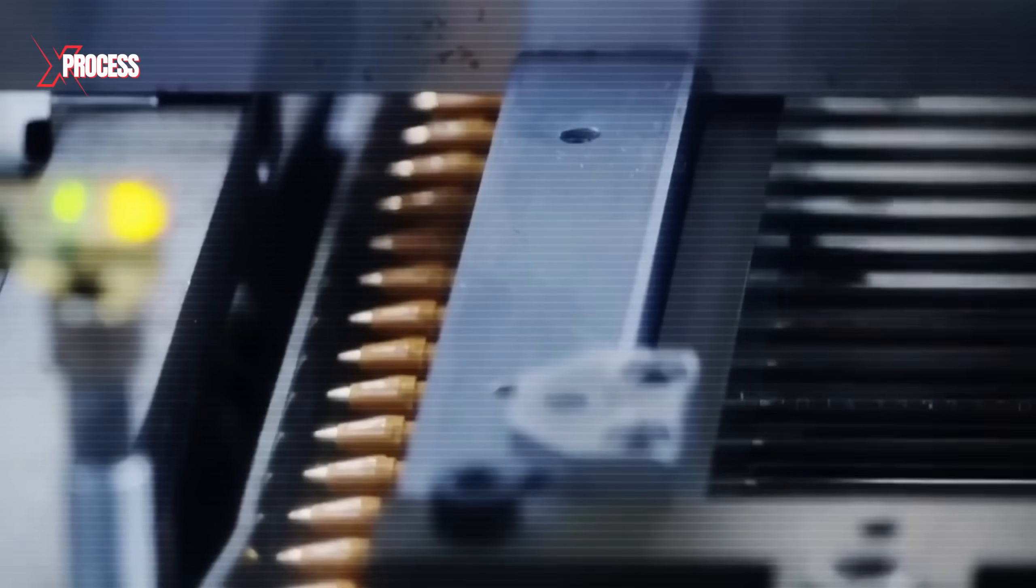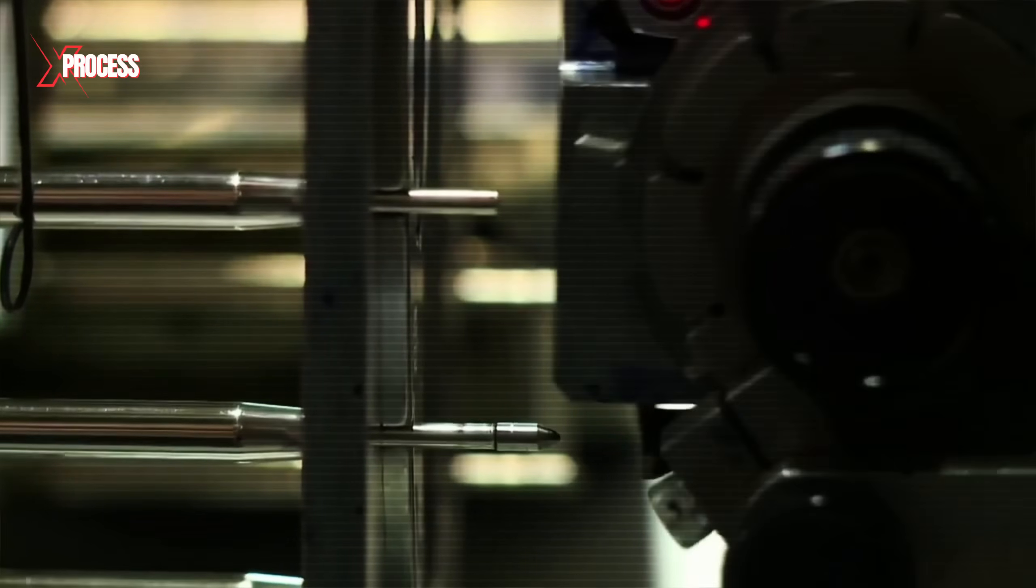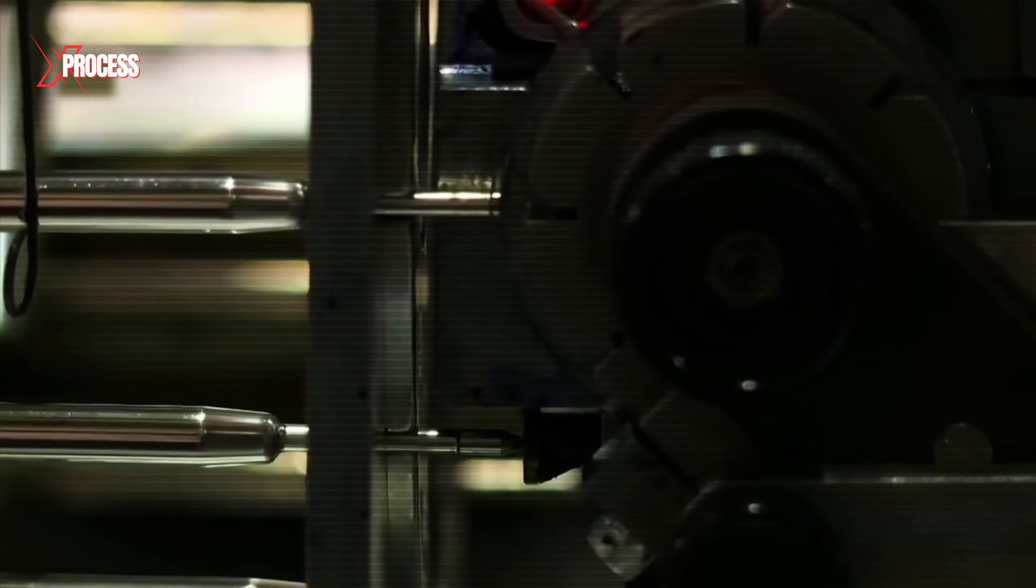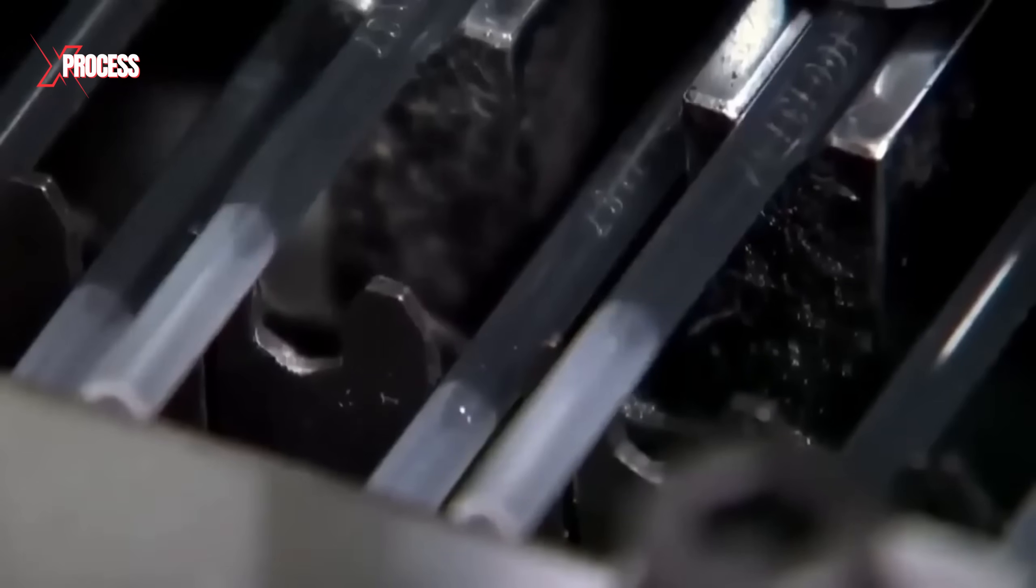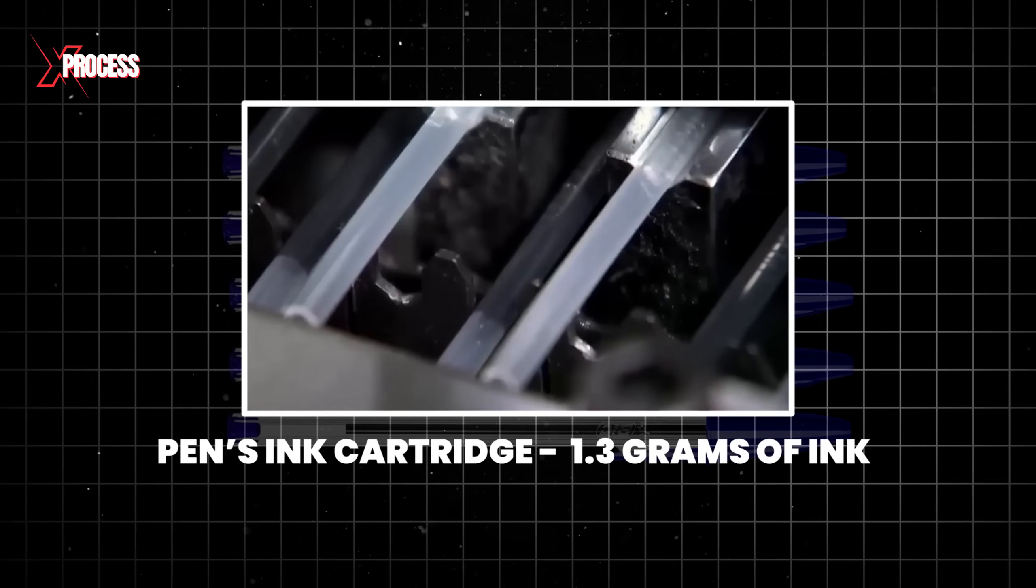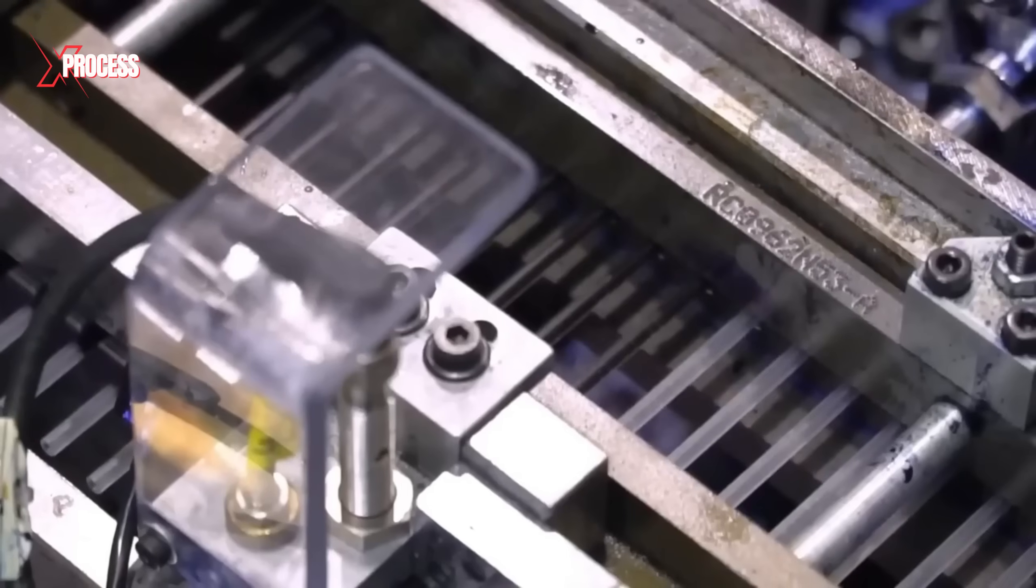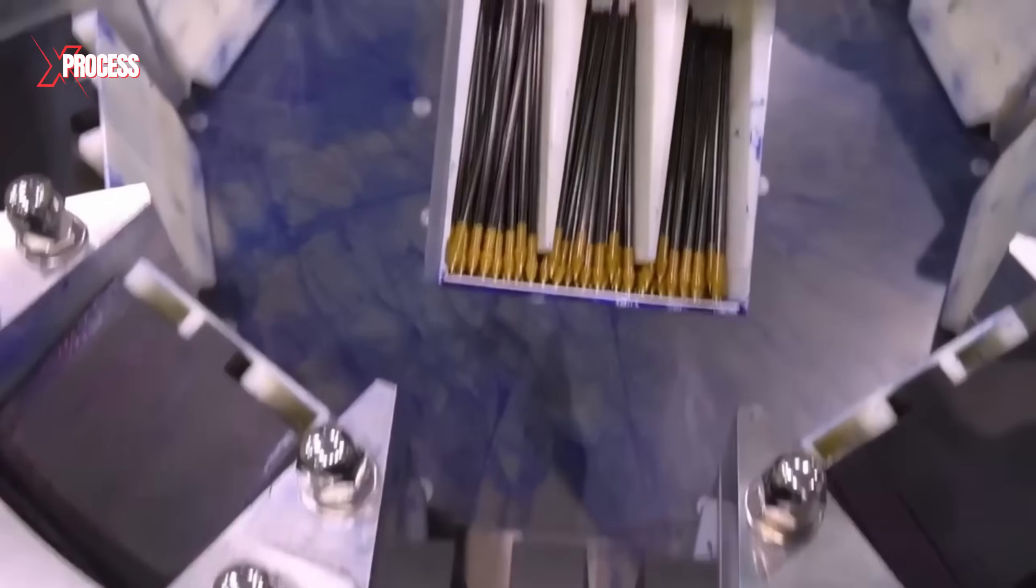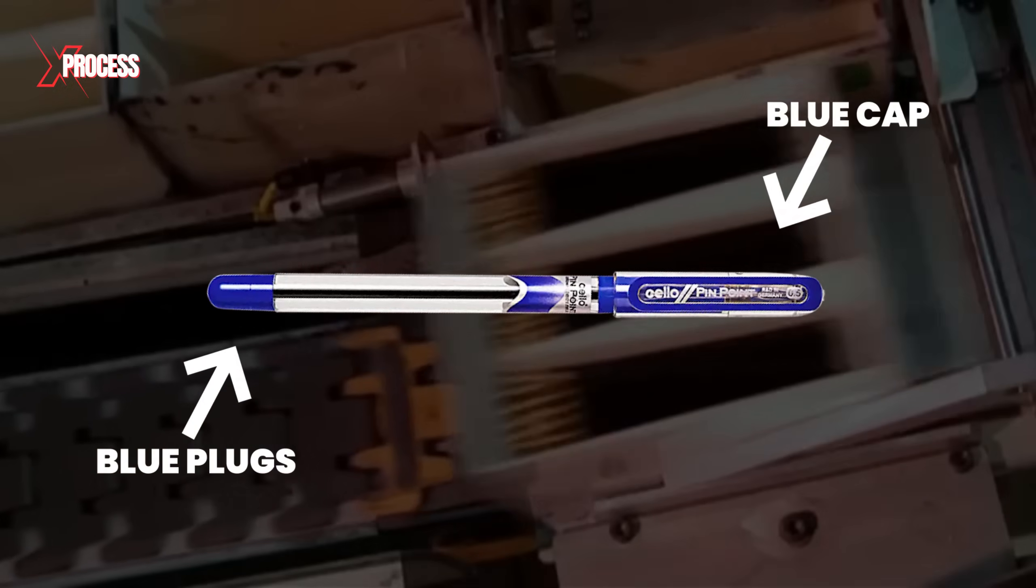This task is carried out in a large assembly hall, where numerous machines fit the pieces together around the clock, 24 hours a day. The plastic tubes are filled with ink and connected to the tips. Each pen's ink cartridge is injected with precisely 1.3 grams of ink using a specialized machine. Following this, every pen undergoes a thorough inspection to verify the presence of all components and to ensure that plugs and caps are of the correct color.